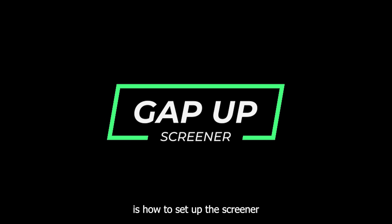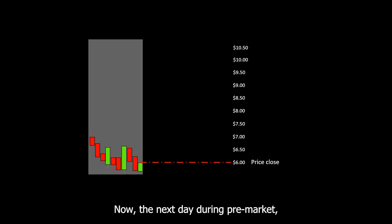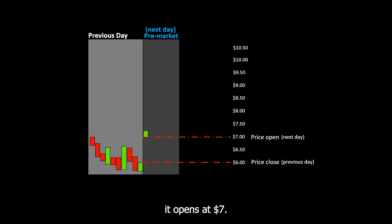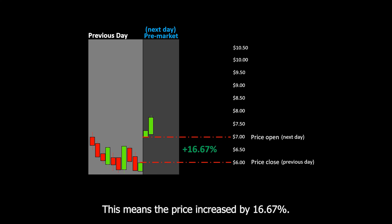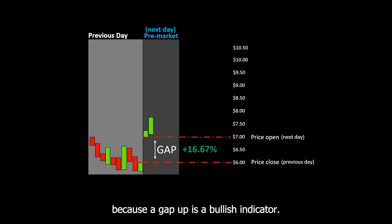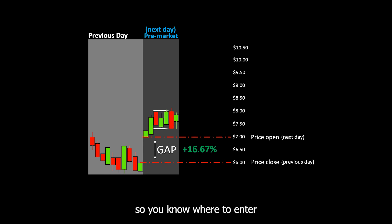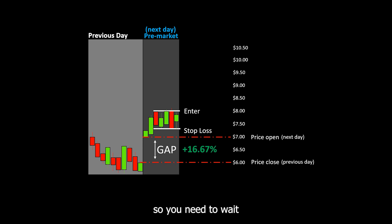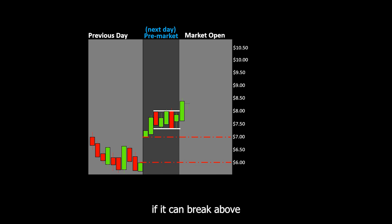Another setting I want to show you is how to set up the screener to find gappers. Stocks that gap up usually means there's a lot of volume and there's a probability it might continue moving in that direction. A gap up play would look something like this — let's say the stock closed at $6, then the next day during pre-market it opens at $7, meaning the price increased by 16.67%. A lot of traders will be watching this because a gap up is a bullish indicator. You still need to wait until the price action builds a clear support and resistance. What usually happens is it forms a pre-market resistance and support — you enter if it breaks above the pre-market resistance and exit if it breaks below the support level.